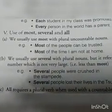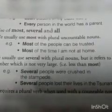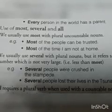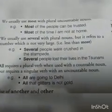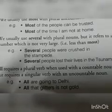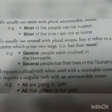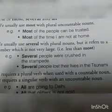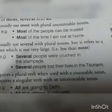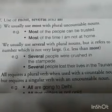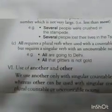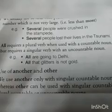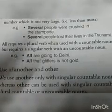Use of most, several, and all. We usually use most with plural uncountable nouns: 'Most of the people can be trusted.' 'Most of the time I am not at home.' Several is used with plural nouns but refers to a number which is not very large — less than most. 'Several people were crushed in the stampede.' 'Several people lost their lives in the tsunami.' All requires a plural verb with countable nouns and a singular verb with an uncountable noun: 'All are going to Delhi.' 'All that glitters is not gold.'